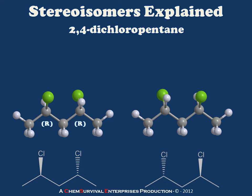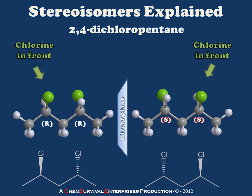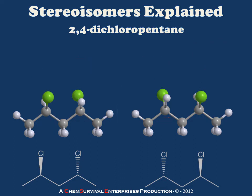If we do our stereocenter assignments, we discover that the molecule on the left is 2R,4R-dichloropentane, and the molecule on the right is 2S,4S-dichloropentane. If we place a mirror plane between the two and analyze whether they are reflections, we see that the outer chlorines are both in front of the page, the inner chlorines are both behind the page — therefore these two molecules are mirror images of one another.